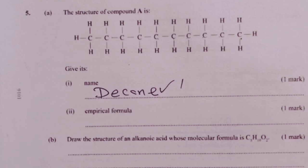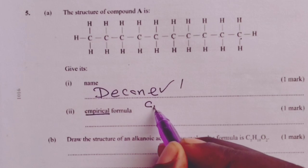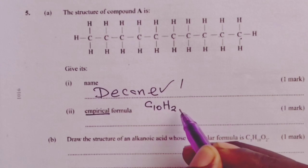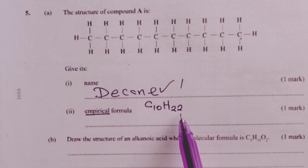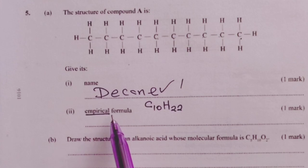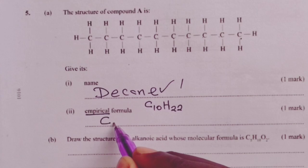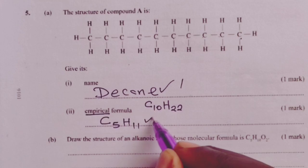For part 2, we are told to give its empirical formula. The molecular formula usually gives the actual ratio of carbon to hydrogen atoms and we have seen this to be 10 to 22. This is the molecular formula. When we are asked to give the empirical formula, it is supposed to give the simplest ratio of the carbon to hydrogen atoms. A candidate was supposed to give the simplest ratio which in this case is 5 to 11 for the next mark.